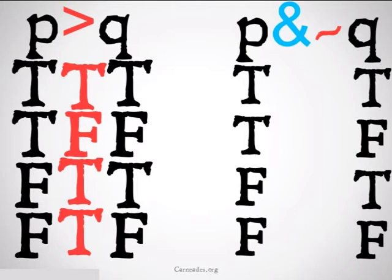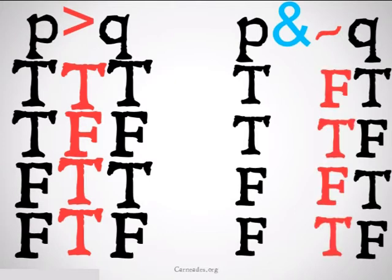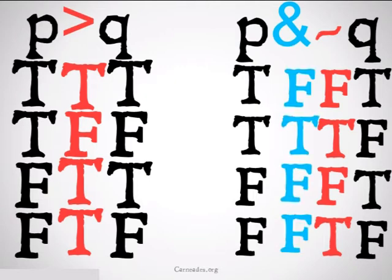Then I would fill in for my conjunction over here, trues and falses under the Ps and Qs. I'd do the negation of the Q, and finally, I would fill in my conjunction, remembering the only time a conjunction is true is when both of the statements are true.